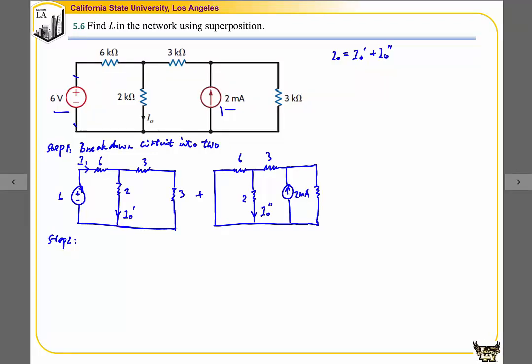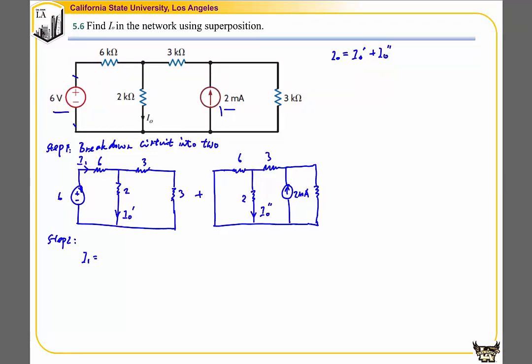The overall current I1 equals 6 divided by the overall resistance. The overall resistance is 6 plus this 2 in parallel with 3 plus 3, which gives us 0.8 mA.